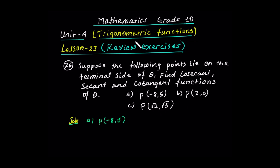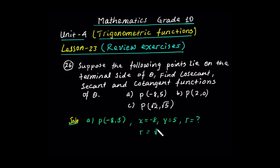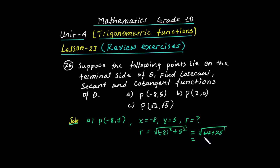Let's see the solution. The terminal side passes through negative 8 and 5. So x is equal to negative 8 and y is equal to positive 5. R is equal to the square root of x squared plus y squared: negative 8 squared plus 5 squared. This equals the square root of 64 plus 25, which equals the square root of 89.